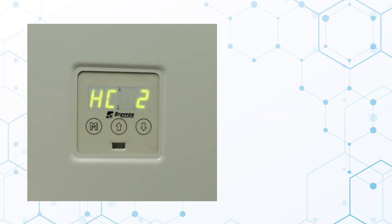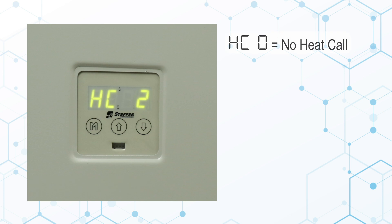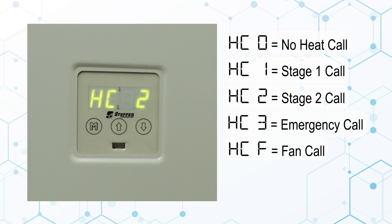Press the up arrow again. The display will show HC and a number. This indicates what stage of heat call the furnace is currently receiving from the thermostat. The display can show a 0, 1, 2, 3, or an F for a fan call.